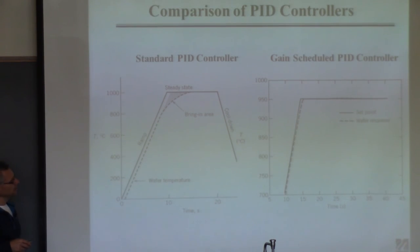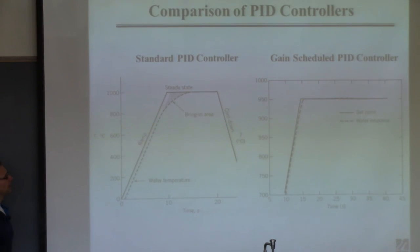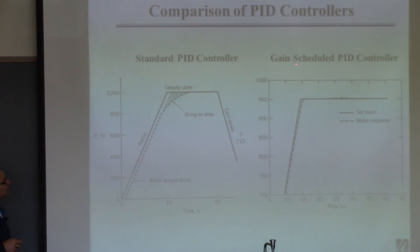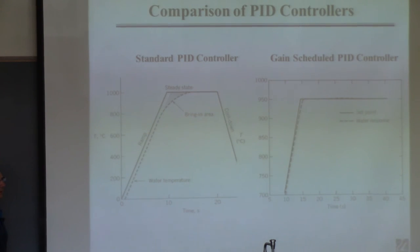Gain scheduling is a very common thing in process control. It's not used all the time like PID, but it's a typical next step. You try PID control first; if it doesn't work, you figure out what went wrong. If the system is nonlinear, you try gain scheduling.